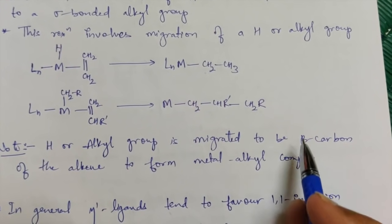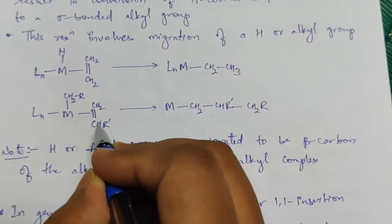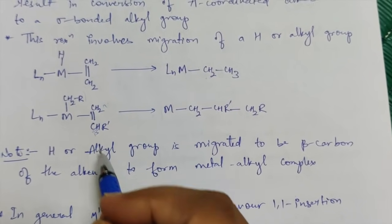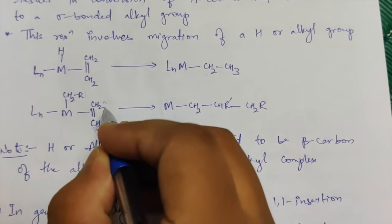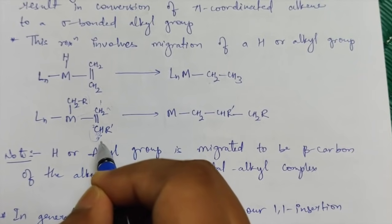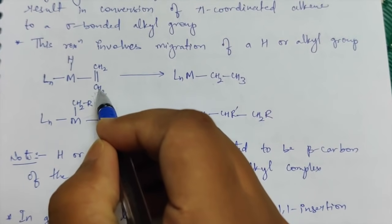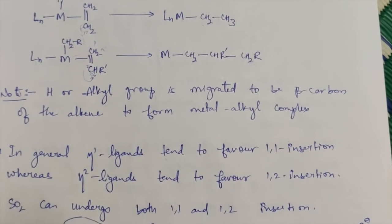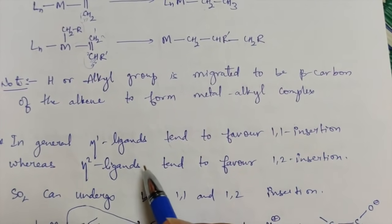The hydrogen or alkyl group migrates to the beta carbon of the alkyl to form a metal-alkyl complex. If this is your alpha carbon and this is the beta carbon, the migrating part will go and bind to the beta carbon. The metal forms a sigma bond with the first carbon and the alkyl part binds to the second carbon — that's why it is also called 1,2 migratory insertion, since migration happens to the second position.